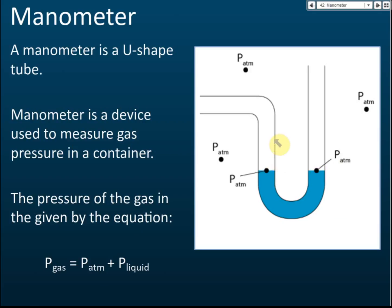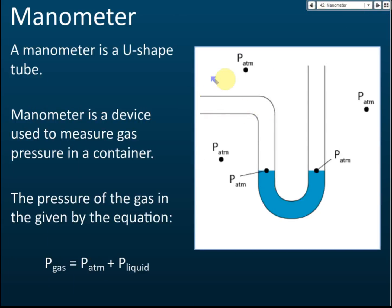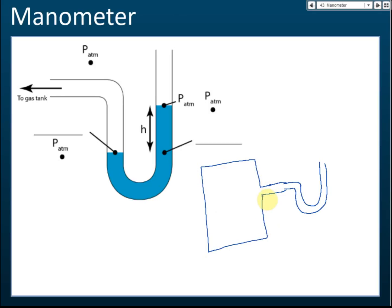Now I'll explain what happens when the manometer is connected to a container. Initially, both sides of the manometer are exposed to atmosphere and the levels are the same. When connected to a gas tank, let me draw this: the manometer is connected via a tube to a gas tank.